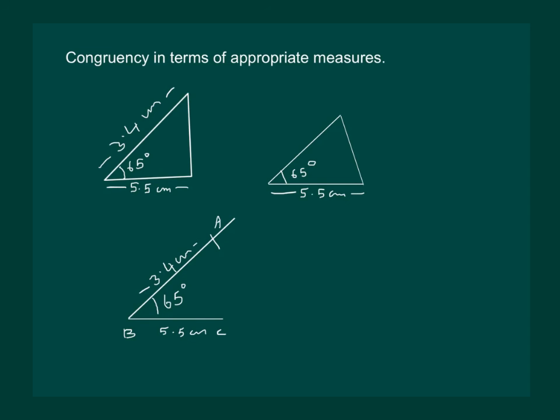Now if we join AC we get a triangle ABC which can completely overlap my triangle and which is congruent to the given triangle. Hence if side angle side is given to us then we can draw a triangle which is congruent to it.